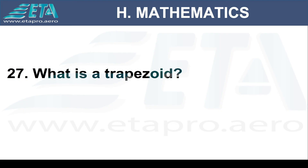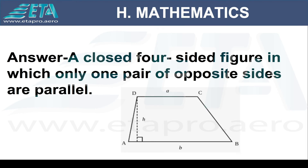What is a trapezoid? A closed four-sided figure in which only one pair of opposite sides are parallel.